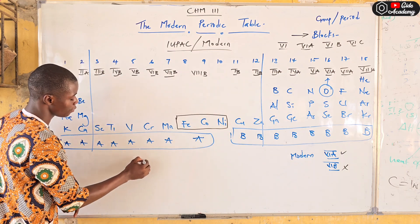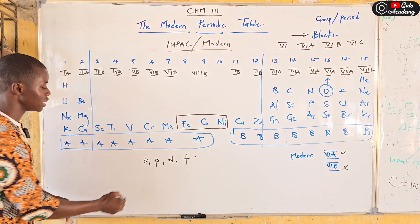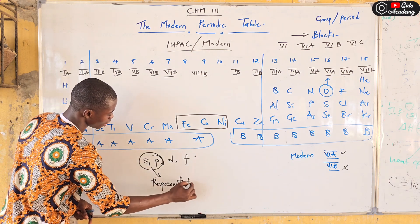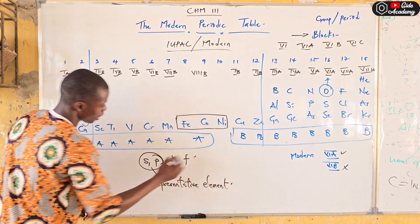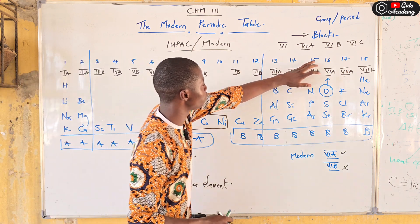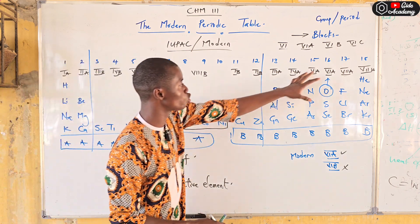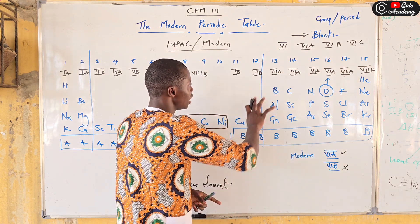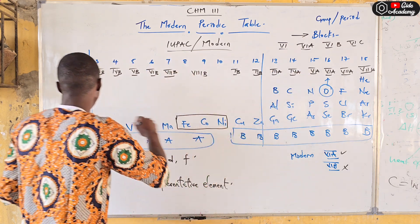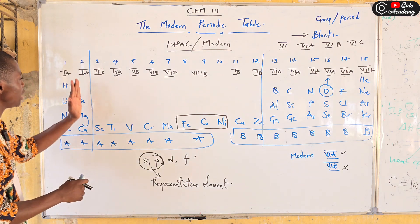Now let's look at block classification. We have four blocks in the periodic table: the s-block, p-block, d-block, and f-block. The s-block and p-block together are called the representative elements. Group 1 and group 2 form the s-block, while groups 13 through 18 form the p-block. Elements in the s-block partially or completely fill the s orbital.